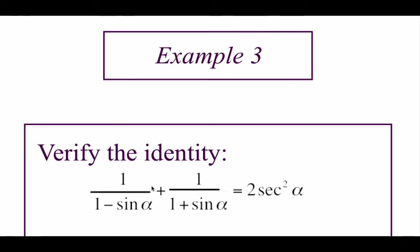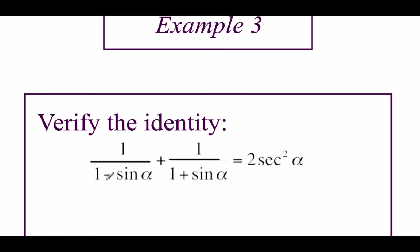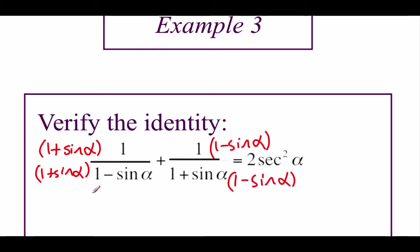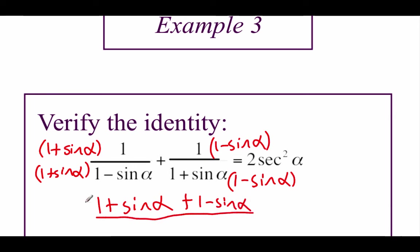In our next example, we've got some fraction addition happening on the left-hand side, and we're going to show that it equals two secant squared of alpha. To add these fractions together, we need common denominators. So I'm going to multiply each fraction by the other fraction's denominator — on the left fraction, multiplying by one plus sine of alpha on top and bottom; on the right fraction, multiplying by one minus sine of alpha on top and bottom. On top, one plus sine of alpha plus one minus sine of alpha. On the bottom, foiling these out — the positive and negative sine of alpha cancel — giving us one minus sine squared of alpha.